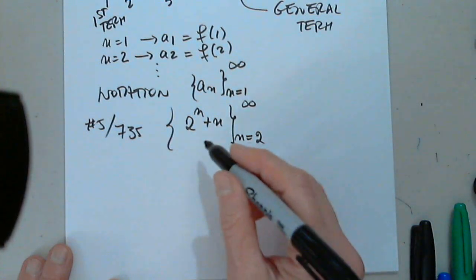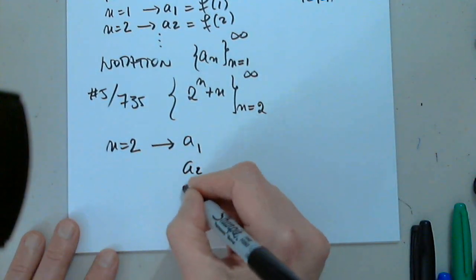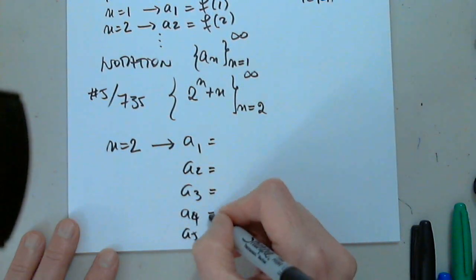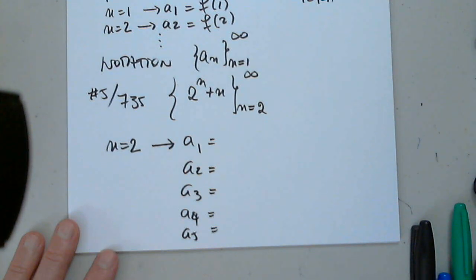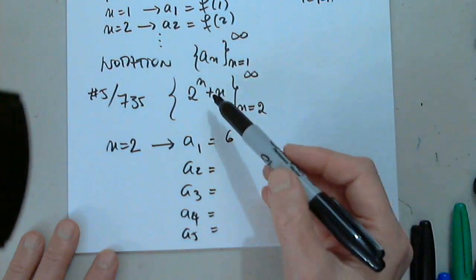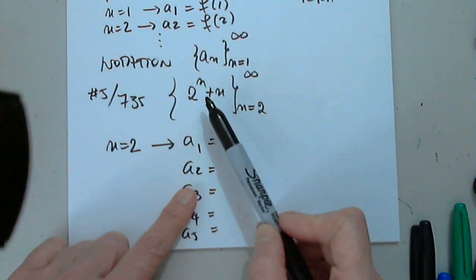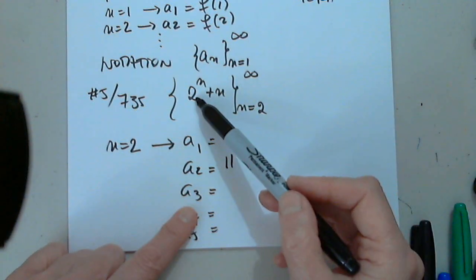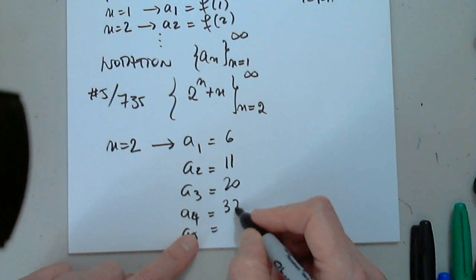When n equals 2, that gives us the first term. So a sub 1 through a sub 5: when n equals 2, we have 2 to the second power plus 2. That's 4 plus 2, which is 6 — the first term. The next term for n equals 3: 2 to the third power is 8, and 8 plus 3 is 11. Then 2 to the fourth power is 16, and 16 plus 4 is 20. And so on, giving us 37 and 70.